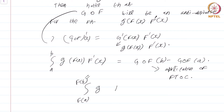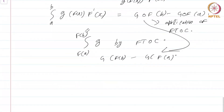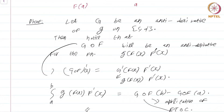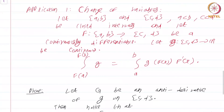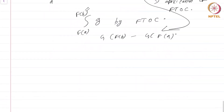Why is the last step the case? Well, again by the fundamental theorem of calculus, ∫_{φ(a)}^{φ(b)} g = G(φ(b)) − G(φ(a)), which is the same as what we computed. So this is the famous integration by substitution, or change of variables, and the proof follows immediately from the fundamental theorem of calculus. That is application one.